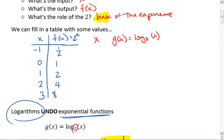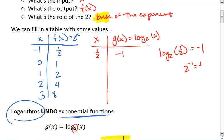Remember, inverse undoes an operation. So if the forward process with the exponent, when we plug in negative 1, we get 1 half, then the inverse reverses those two things. So if we plug in 1 half, we get negative 1. This means log base 2 of 1 half is negative 1, because 2 to the negative 1 is 1 half.